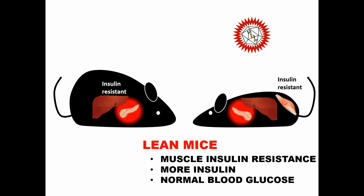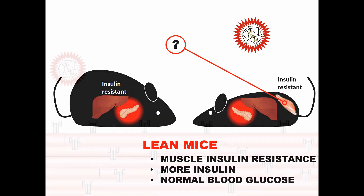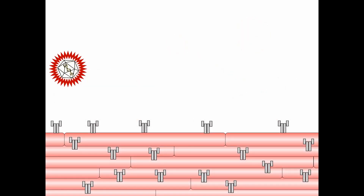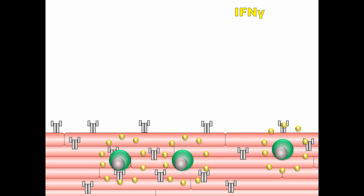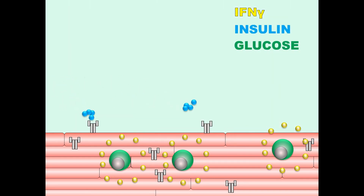So what happens in the muscle in response to infection? Here we see a muscle expressing high levels of insulin receptors. When a virus invades the body, some of these cells get infected. This, in turn, attracts natural killer cells, which start producing cytokines, such as interferon gamma, to clear the infection. In addition, interferon gamma drives the muscle to downregulate the insulin receptor. This means that when blood glucose levels rise, more insulin needs to be produced in order to bring glucose levels back to the baseline.